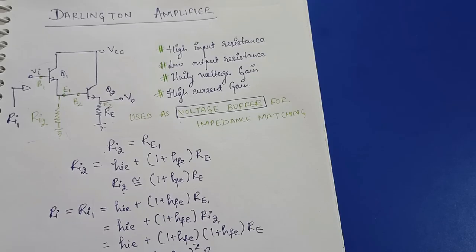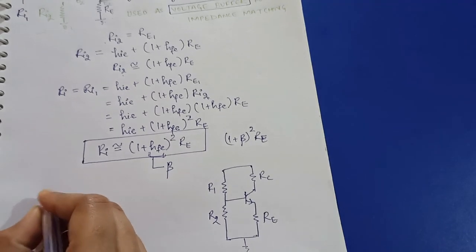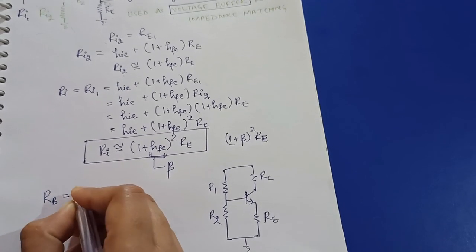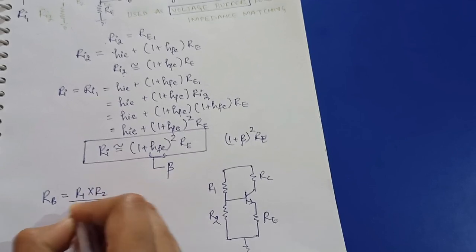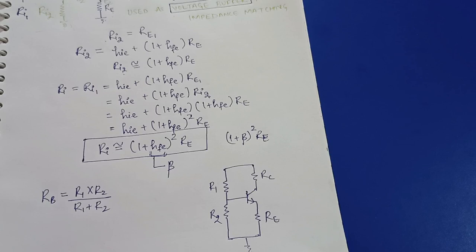This was a Darlington amplifier in which we have not used any type of bias circuit. But if we assume that a self-bias circuit is used — let me draw it for you — in this configuration we first calculate RB, which is the base resistance and is the parallel combination of R1 and R2.